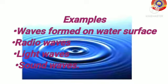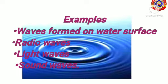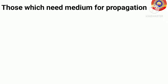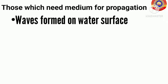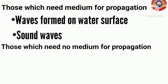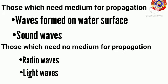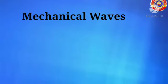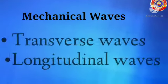Some examples of wave motion are waves formed on water surface, radio waves, light waves, sound waves, etc. Do all these waves need a medium for their propagation? Radio waves and light waves need no medium — they can propagate without a medium. The waves which need a medium for their propagation are mechanical waves. There are mainly two types of mechanical waves: transverse waves and longitudinal waves.